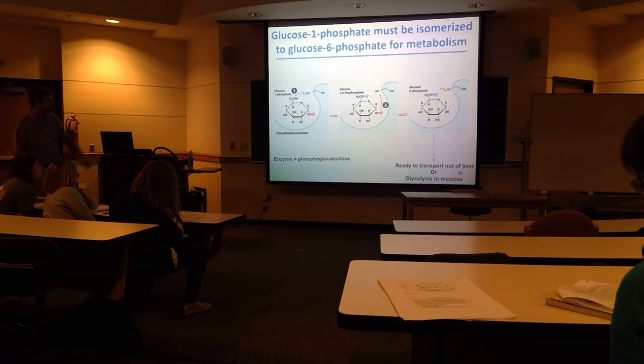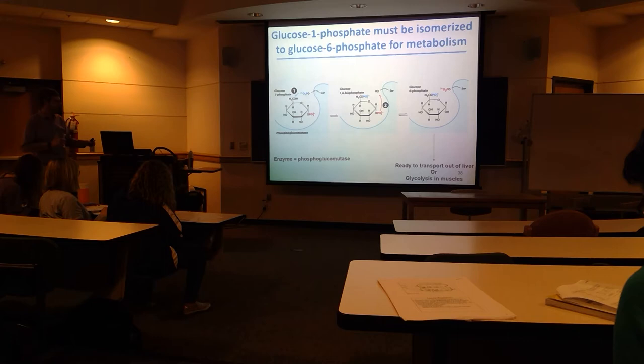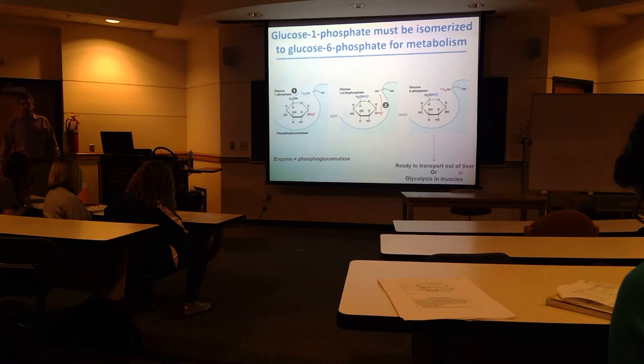This is carried out by phosphoglucomutase. Each time glycogen phosphorylase generates glucose-1-phosphate, that glucose-1-phosphate is going to be converted into glucose-6-phosphate. So really, the end product of glycogenolysis for the most part is going to be glucose-6-phosphate — that's the end molecule that glycogen is broken down into.